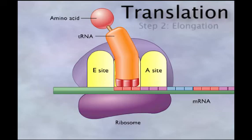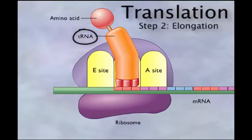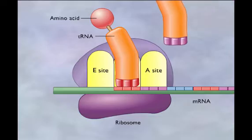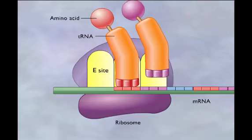The second step of translation is called elongation because our peptide is going to start getting longer. After the initiator transfer RNA attaches to the P site, the second transfer RNA, which is carrying another amino acid, settles into the A site on the ribosome.